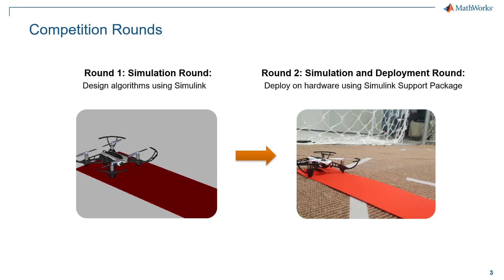As mentioned in the last video, the competition consists of two rounds — simulation and deployment — and each of the teams have to implement the Minidrone line follower for both the rounds.